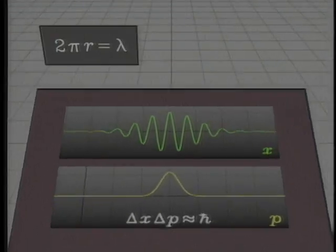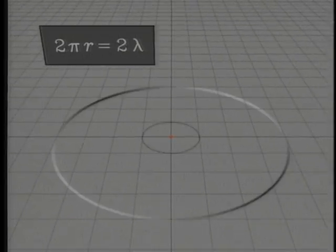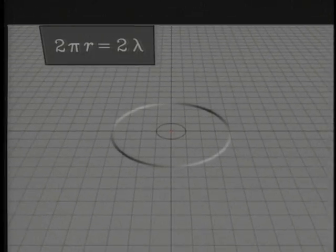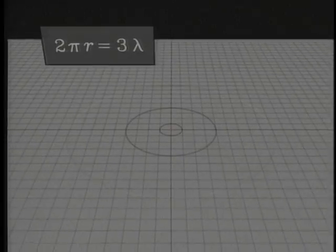Now the orbits are just where the electron waves have one cycle, two cycles, three cycles, and so forth going around the nucleus. But this isn't exactly right.